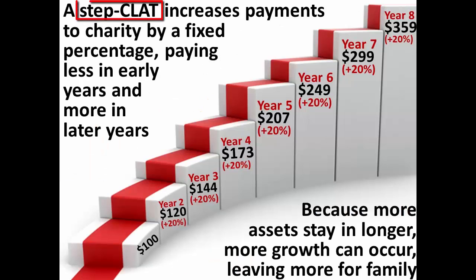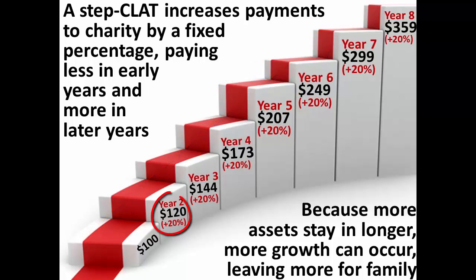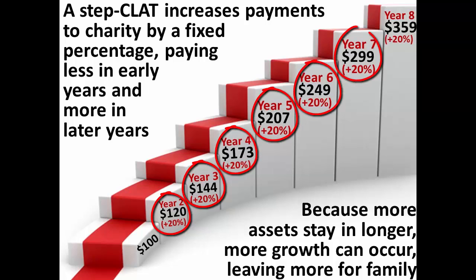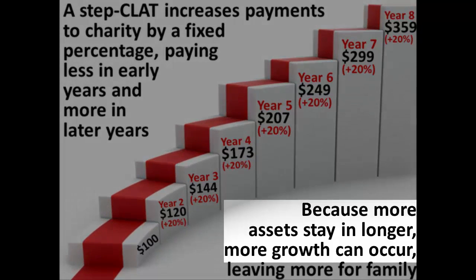A STEP CLAT, that is a form of non-grantor charitable lead annuity trust, provides for steadily increasing payments to the charity during the fixed term of the trust. The payments are not flat, but they are known in advance. The motivation for pushing more of the charitable payments to the later stages is that this allows more assets to stay in the trust longer. For assets that outperform the initial Section 7520 rate, the longer they stay in the trust, the more excess growth they will generate.